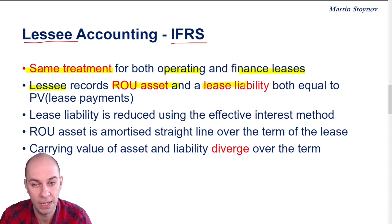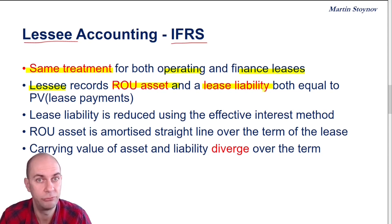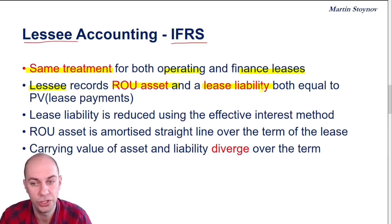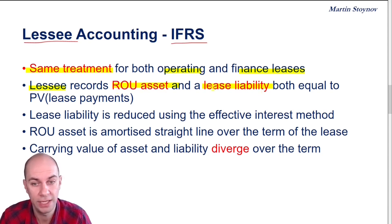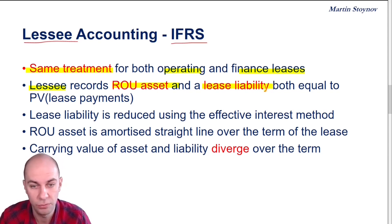On the right hand side of the balance sheet, I'm going to have to capitalize the liability — I'm going to have to record a liability on the balance sheet: the lease liability. Both the ROU asset and the lease liability at the start of the lease will be equal to the present value of the lease payments.